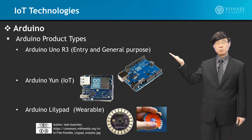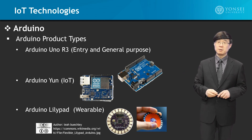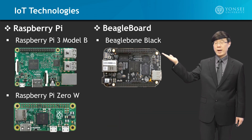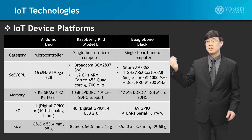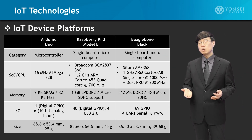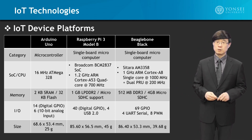The next topic will be IoT technologies, and the major popular platforms that are being used, focusing on Arduino product types, as well as Raspberry Pi and BeagleBoard systems. We will go into the details, the specifications, and look into the pros and cons, the advantages, disadvantages, and the features that they include.